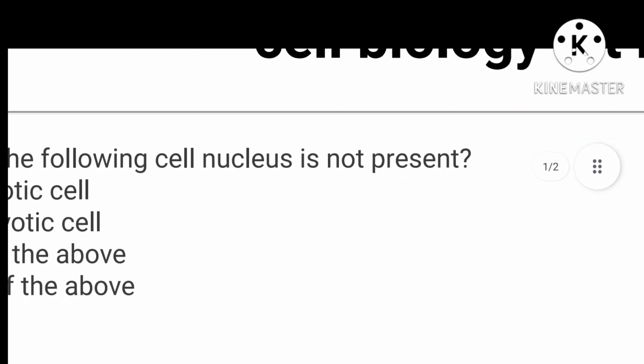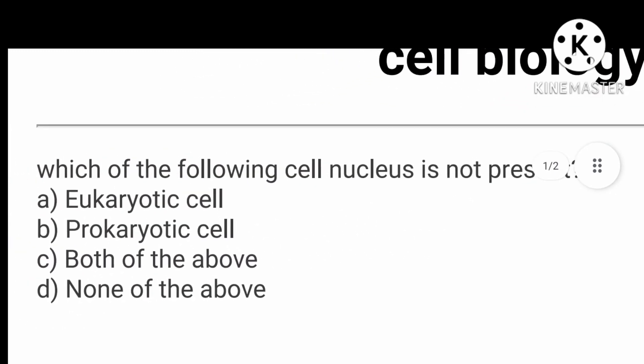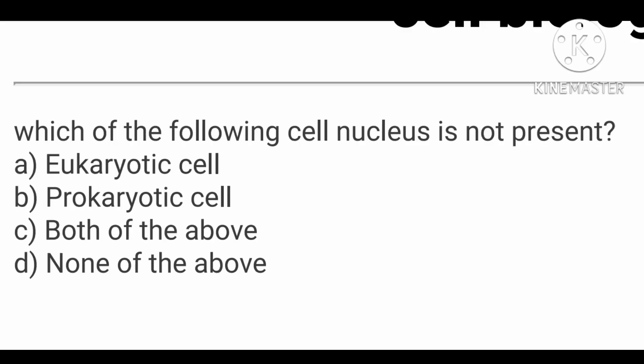I will try to complete these bits and choose the first bit. Let's check. Because of the cell biology, there is a lot of weight, so I will give the first bit of cell biology. Which of the following cells does not have a nucleus present? In each cell there is a nucleus. So first option is eukaryotic cell, second option is prokaryotic cell.